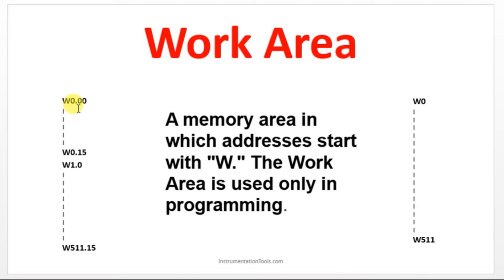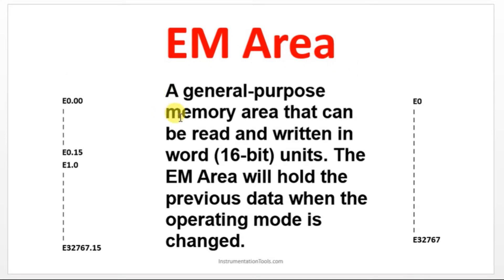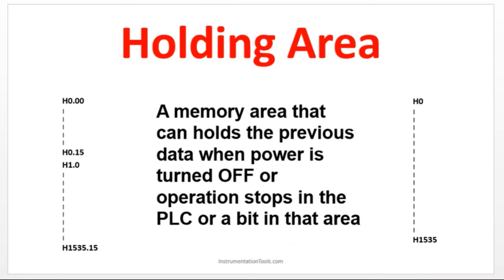You can utilize this 16-bit for the word, and we have the DM area. It's for 16-bit units. Once we start the instruction, you can understand where and when we are going to use these kind of addressing. We have an EM area. This is for a general purpose memory area that can be written and read in 16-bit. You will be using this complete 16-bit for one word. The EM area will hold the previous data when the operating mode is changed.